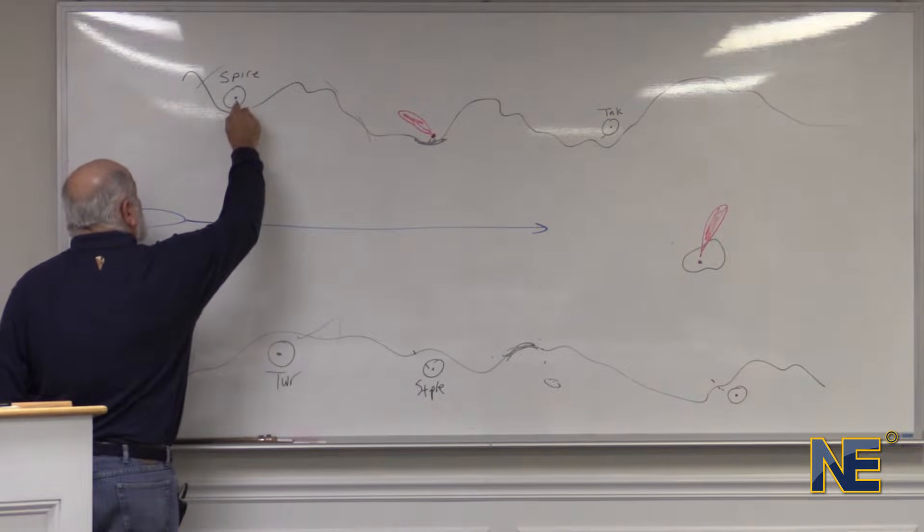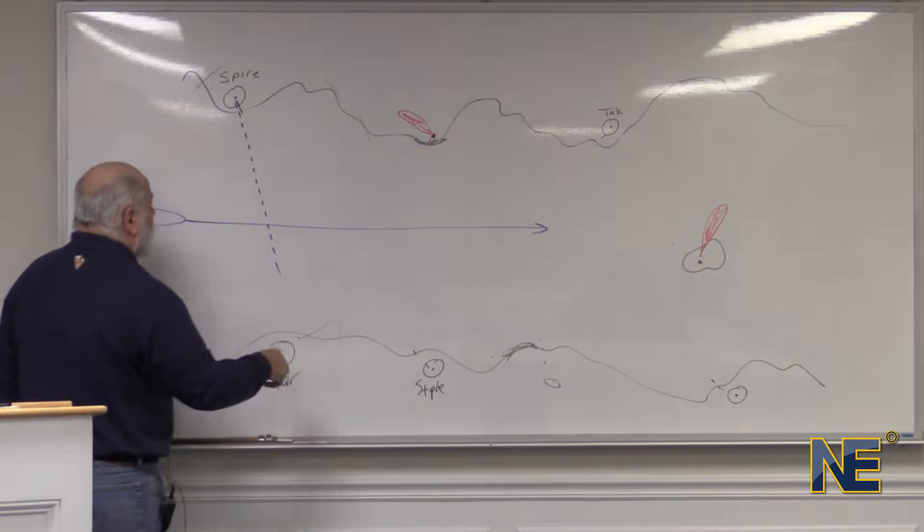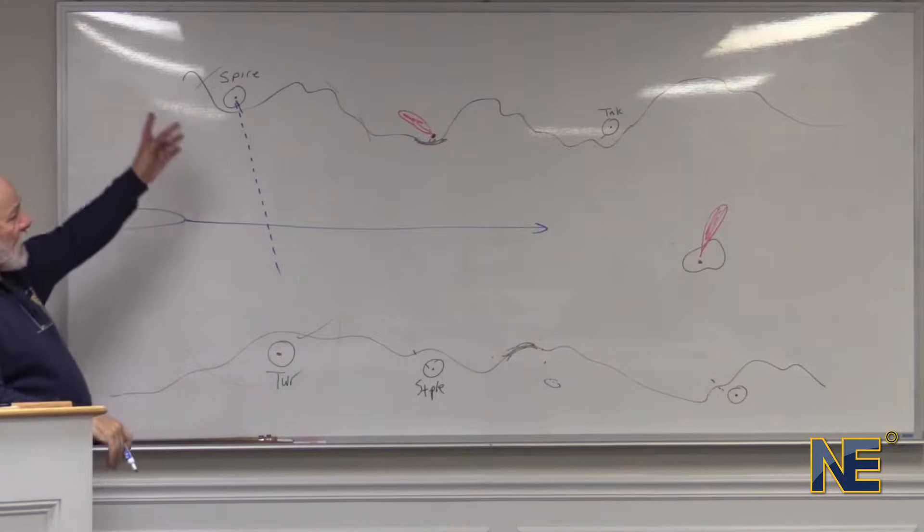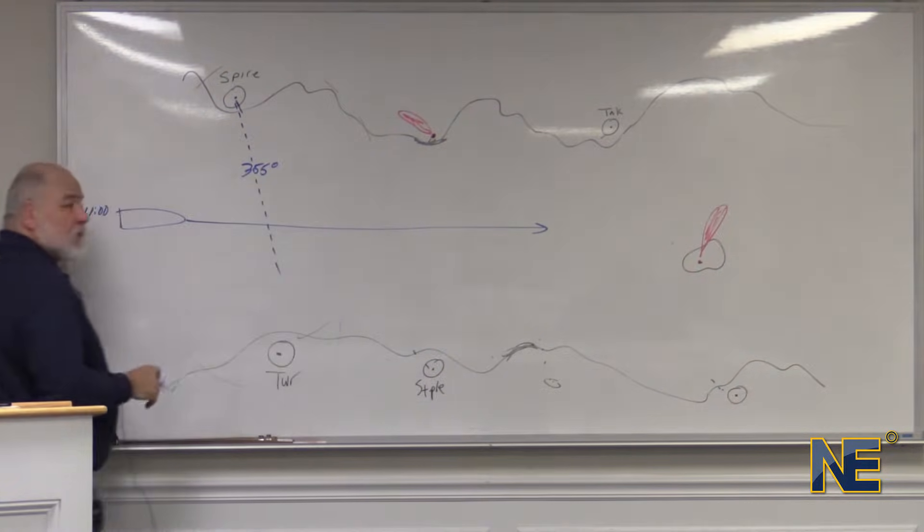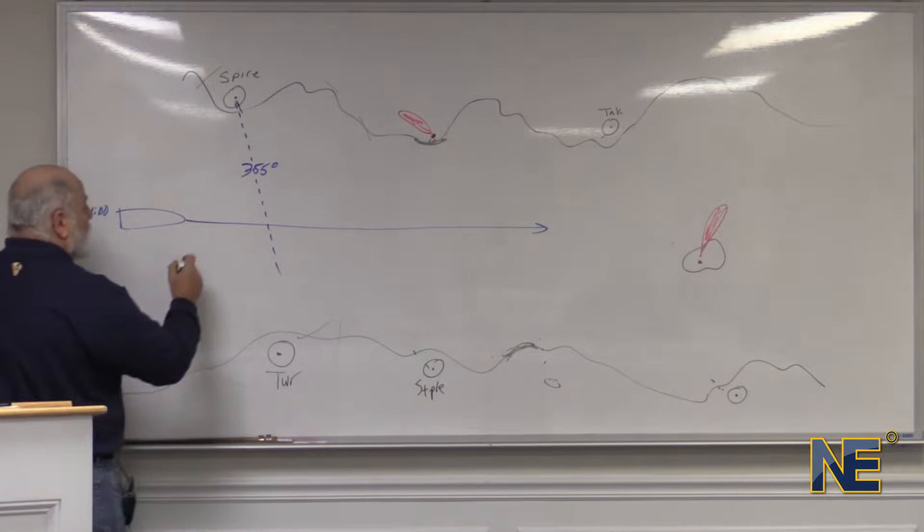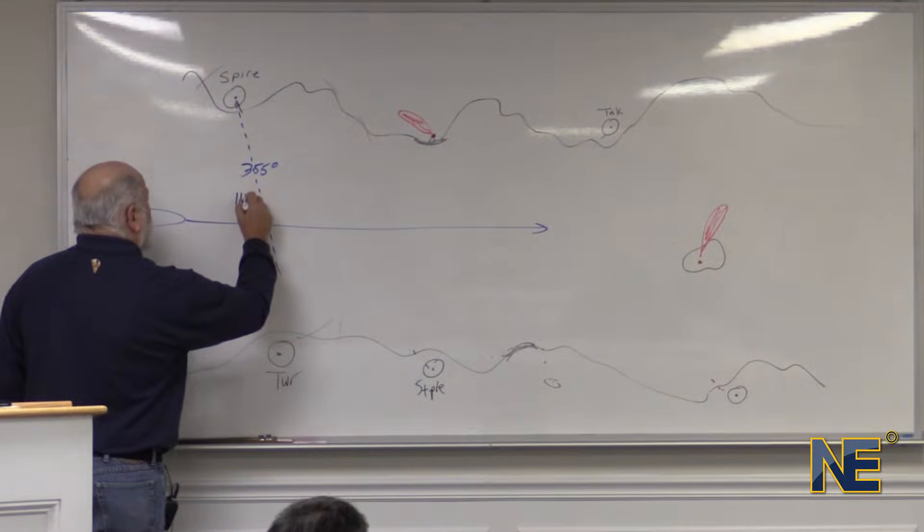So let's assume that we take a line of position off this spire. We just look out the window and shoot a line of position off that spire, transfer it to the chart, see what it is. So we say it's 355 degrees, whatever it is. And we draw it and we look at our watch and we see that that occurred at 1115.